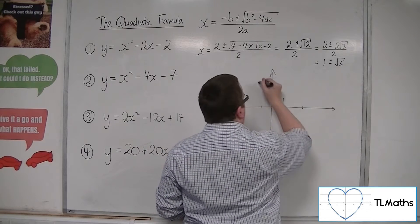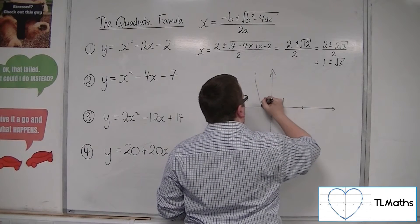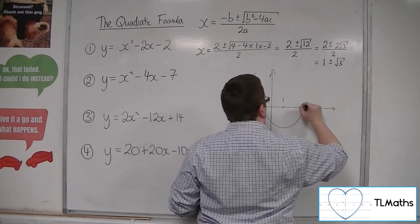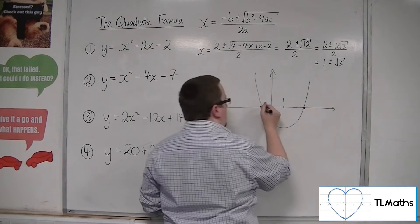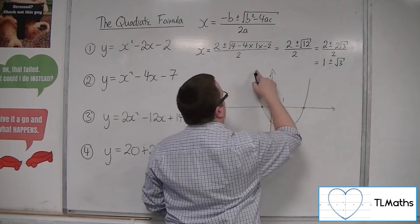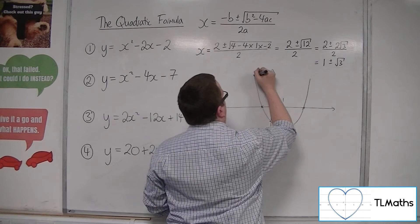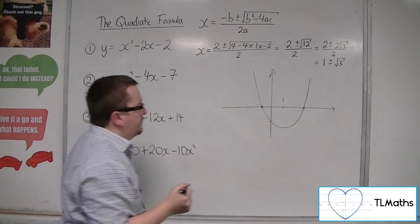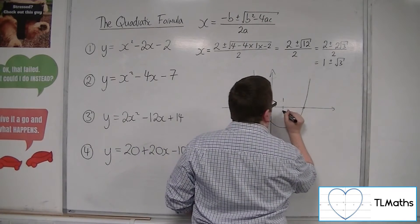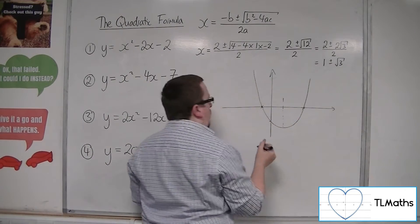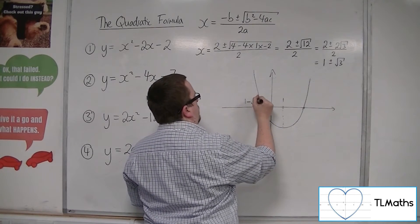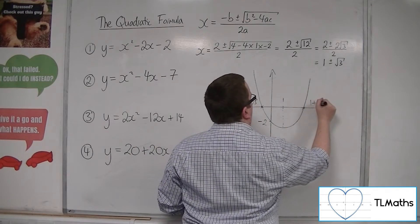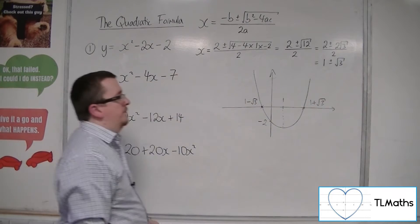So the curve must do something like that. That wasn't particularly good, but remember it is a sketch. Now that curve can't go up like that, so something like that. So that is your vertex, that 1. It's crossing the y-axis at minus 2. This is 1 minus root 3, and that's 1 plus root 3. OK.